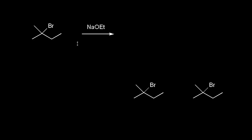Let's look at the regiochemistry of the E2 mechanism. We'll draw our products, go through the mechanism, and talk about why this reaction is regioselective. On the left is our alkyl halide, and here is our strong base, sodium ethoxide — Na⁺ and ethoxide with a negative charge. Since we're dealing with a strong base, we know we're going to do an E2 mechanism.